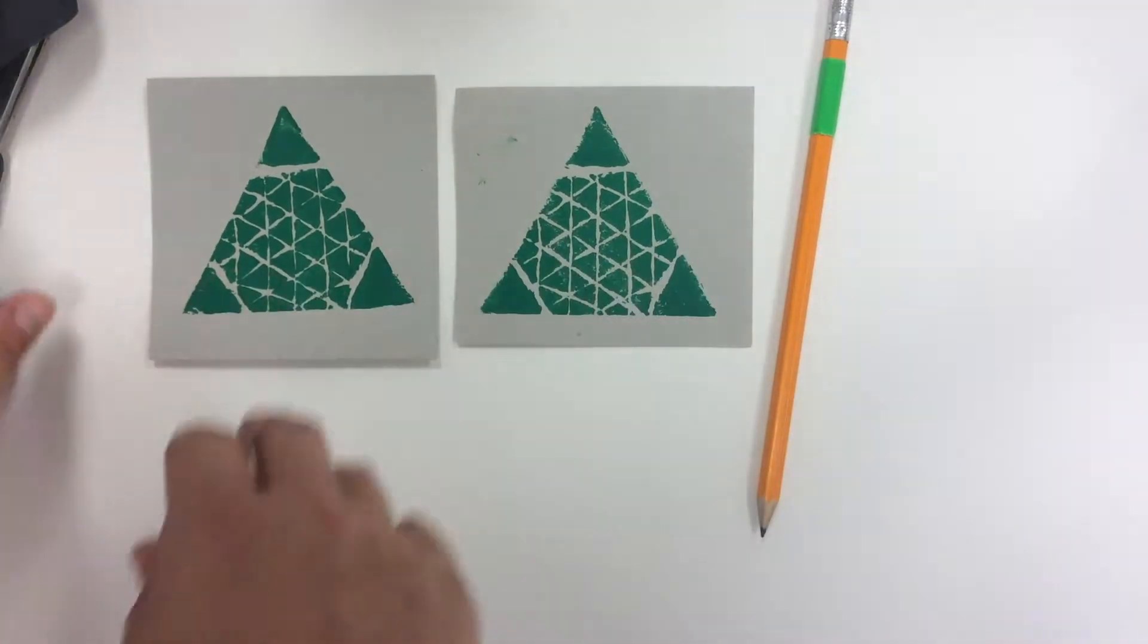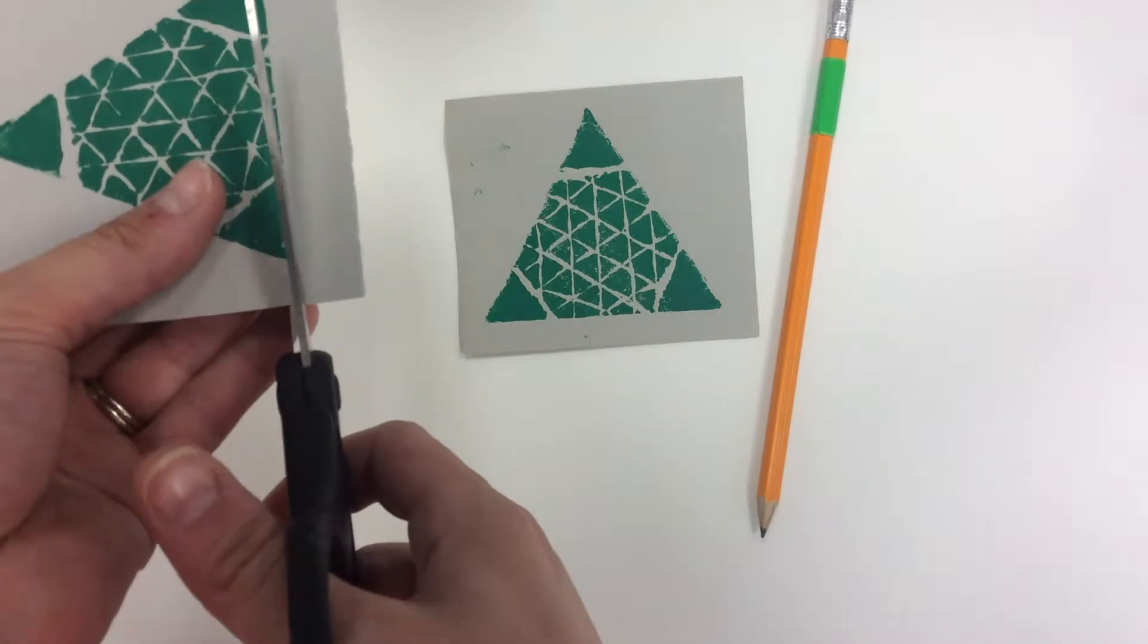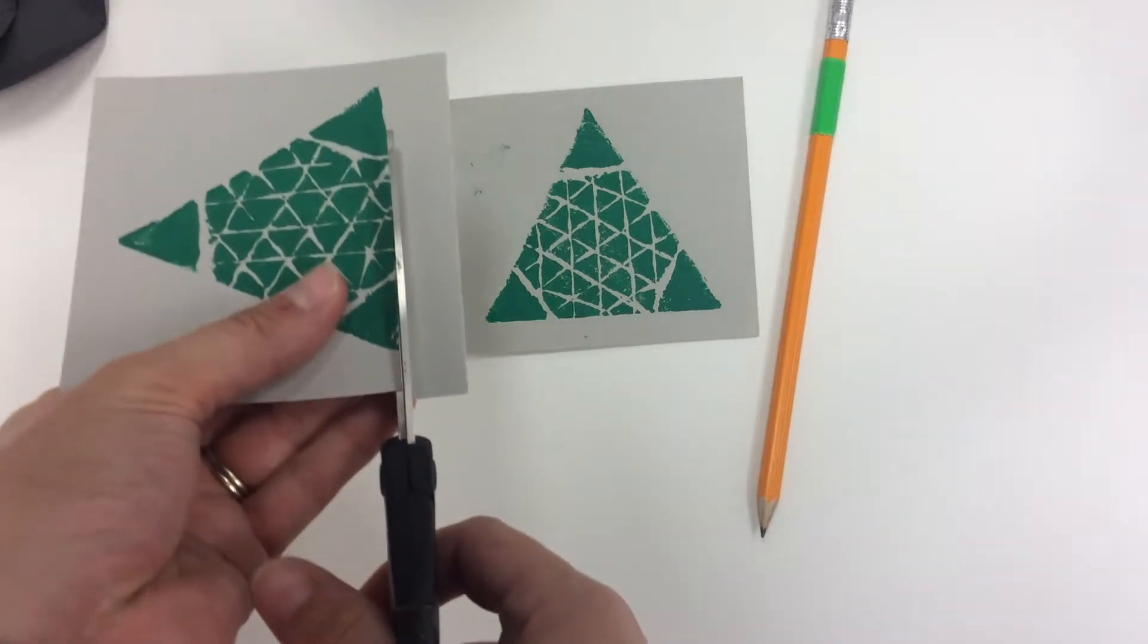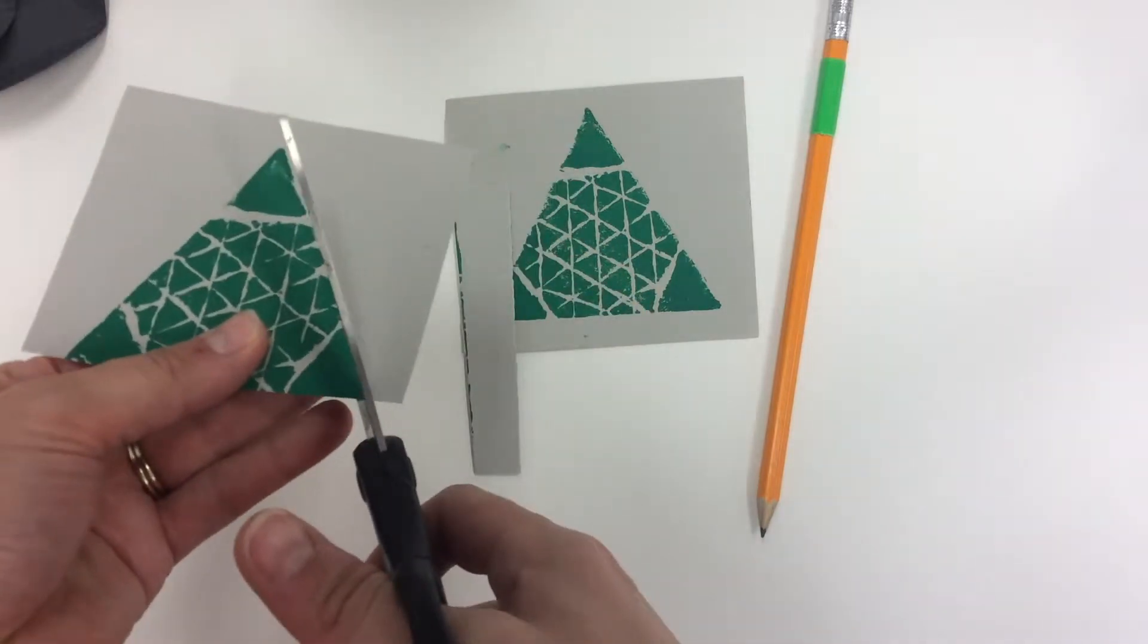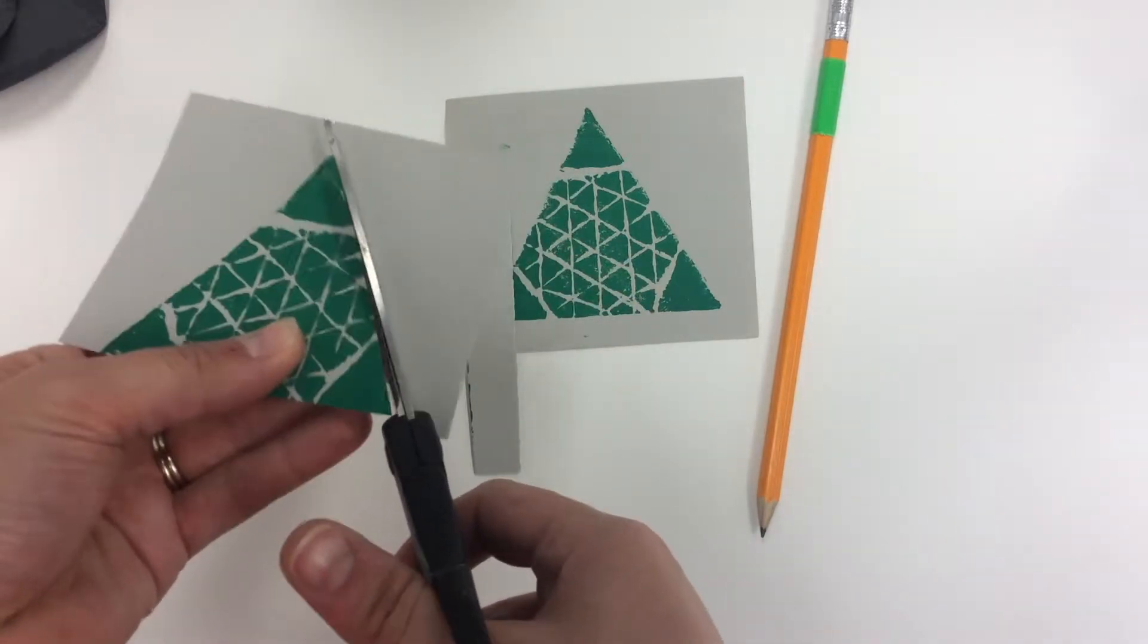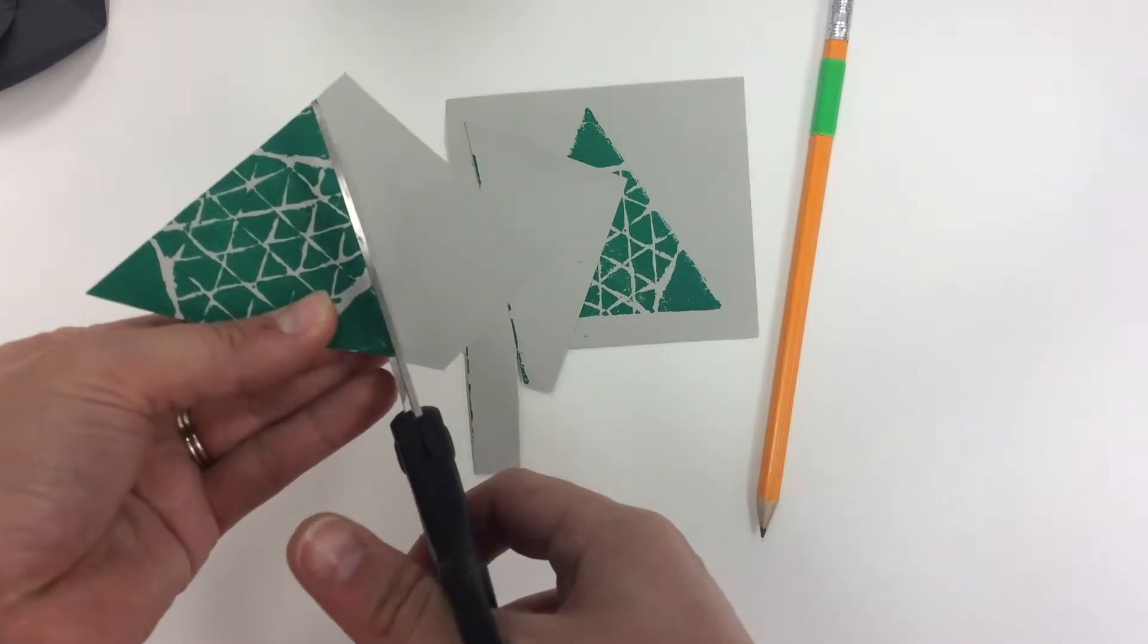Once you have those selected, you're going to carefully cut along the edges with scissors and cut out your triangles. You want to cut nice and neat, right next to the edge.